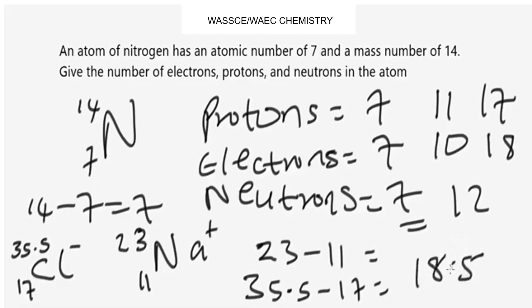For calcium ion Ca2+, the two-plus sign means calcium is giving out two electrons. Similarly, sodium ion Na+ means sodium is giving out one electron. This is basically how you solve problems involving atoms and the structure of an atom in chemistry.